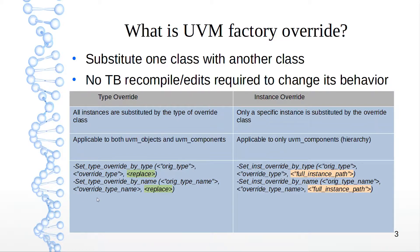For the syntax: type override uses `set_type_override_by_type` or `set_type_override_by_name`. The arguments are the original type and the override type (as strings), and a boolean — one means the override takes effect, zero means it does not. For instance override, you use `set_inst_override_by_type` or `set_inst_override_by_name`, providing the original type, the override type, and then the full instance path.